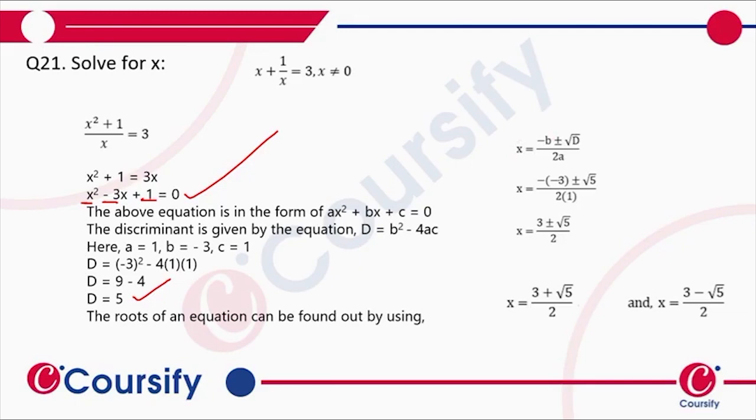It will be -(-3) ± √5 divided by 2 times 1, so 3 ± √5 divided by 2. So our answers are x = (3 + √5)/2 and x = (3 - √5)/2.